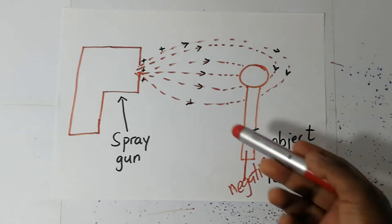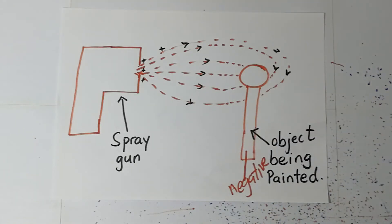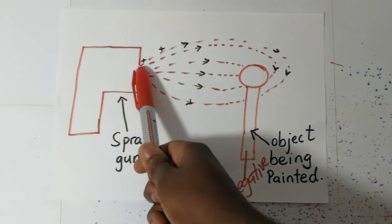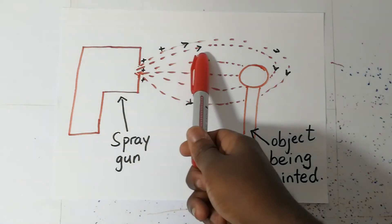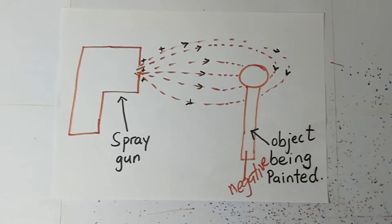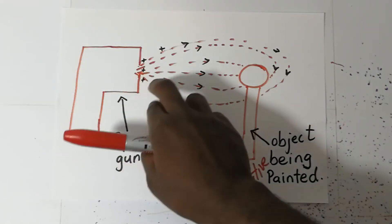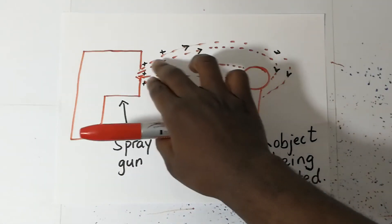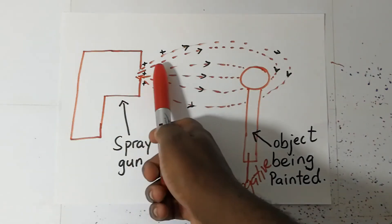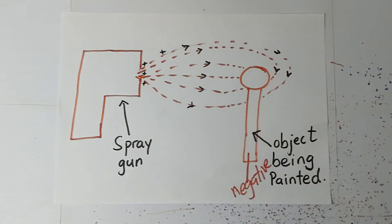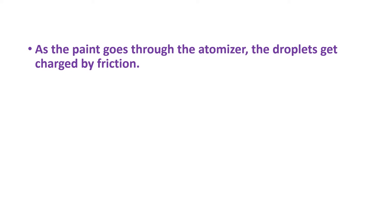To sum this up for those doing exams: as the spray goes through the atomizer, the droplets get charged by friction. The similar charges on the droplets cause repulsion, which makes the particles spread out.